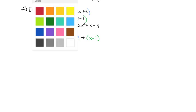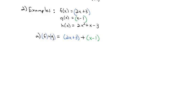Going through and combining like terms — because the addition doesn't change anything — 2x + x is 3x, and 3 − 1 is +2. So (f + g)(x) = 3x + 2.